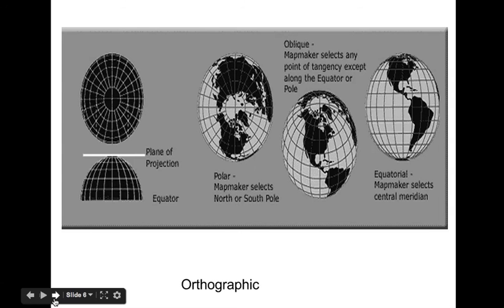The most common type of orthographic map is a picture of the Earth as it appears from outer space. The distortion on this map occurs around the edges and is most true at the point where the flat paper touches the globe.